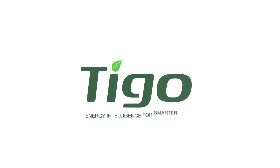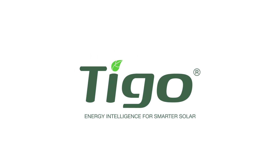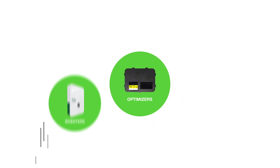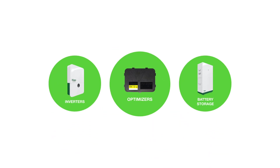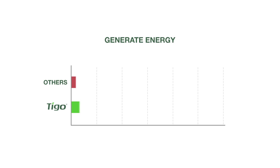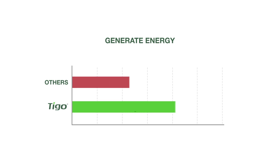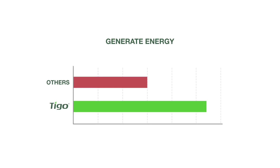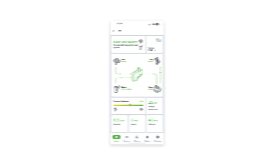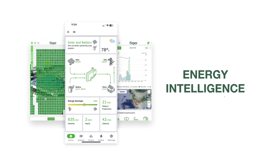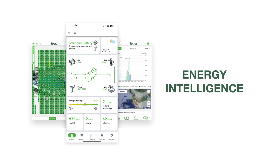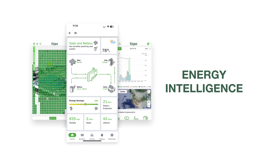Tygo is a leader in the solar industry, offering innovative products like optimizers, inverters, and battery storage systems. With Tygo, Sally will generate more energy than with a competitive product. Today, we'll see how Sally accesses the EI platform, explores its features, and discovers the benefits of the platform.